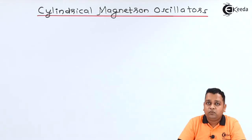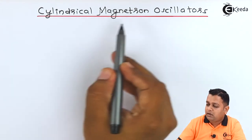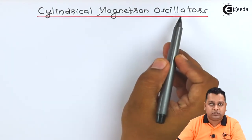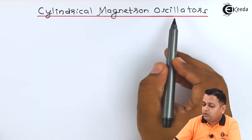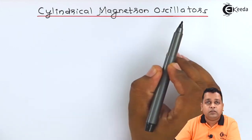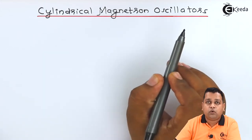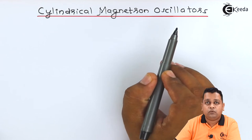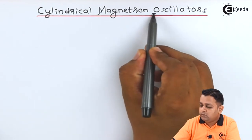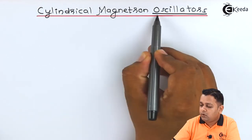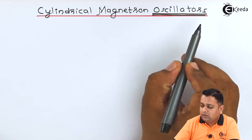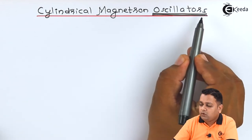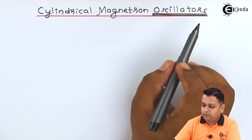We start with our topic: the Cylindrical Magnetron Oscillator. The oscillator works for the generation of the microwave signal — it is a microwave energy or microwave signal generator without providing any RF input.